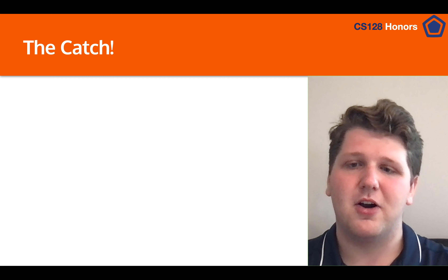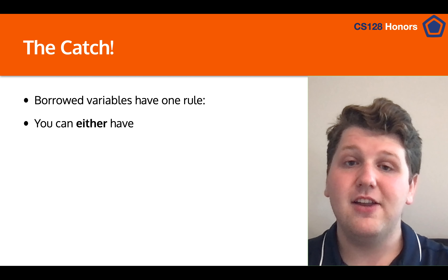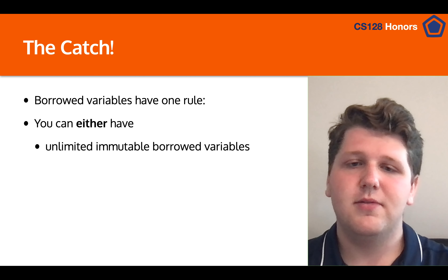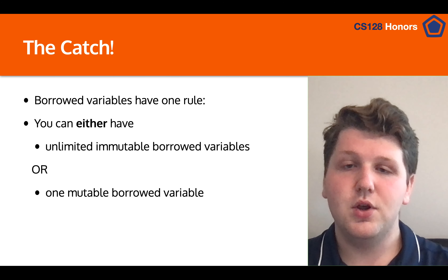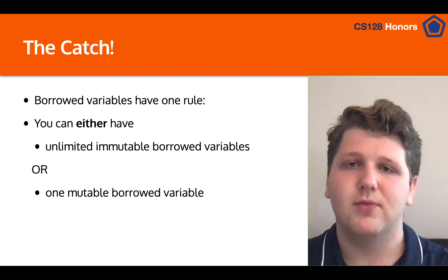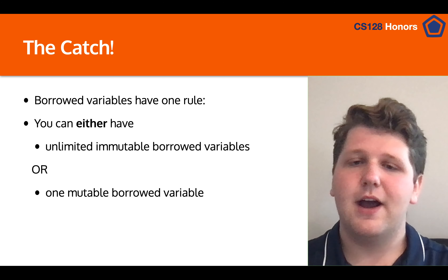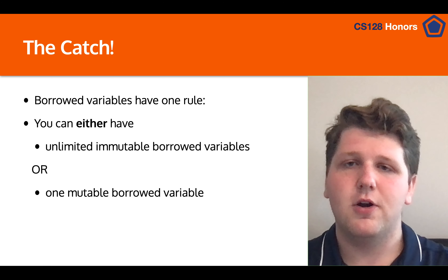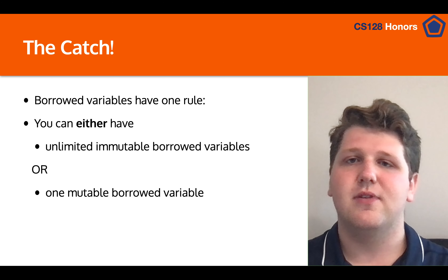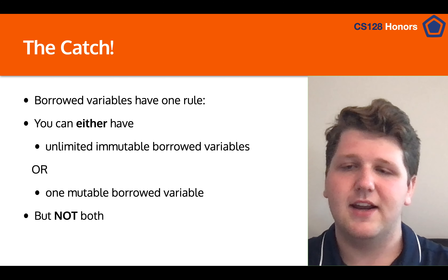There is one catch with borrowing: borrowed variables have one rule — you can either have unlimited immutable borrowed variables where you cannot change the value, or one mutable borrowed variable. We don't want many mutable borrowed variables because that creates race conditions when you have threads. So you can have many immutable variables, or you can change it but then you can't have anything else looking at it at the same time. You can't have both.